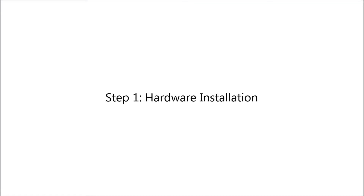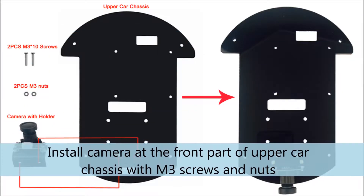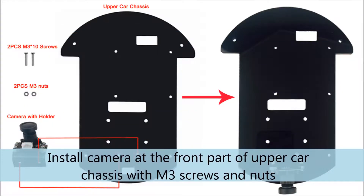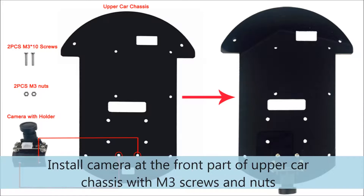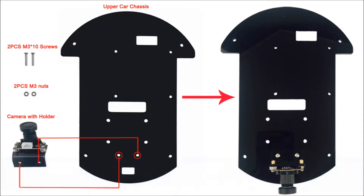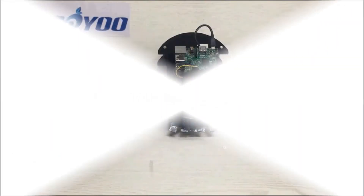Step 1 – Hardware Installation. Install the camera at the front part of the upper car chassis with M3 screws and nuts. Step 2 – Hardware Connection.